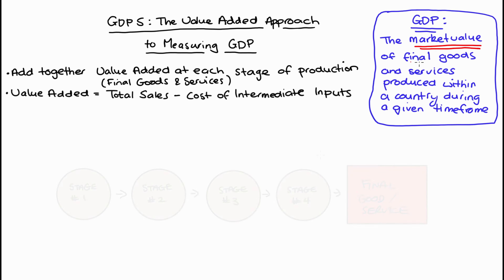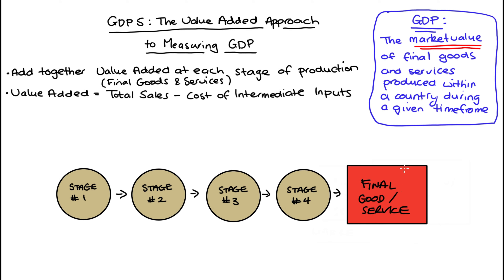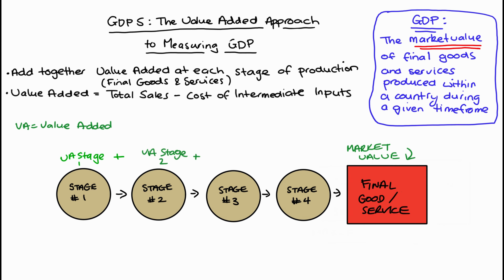Very abstractly, for instance, if to produce some final good or service it took four stages, the final market value of that final good or service can be decomposed into the value of production achieved at stage one, plus the value that is added at stage two, at stage three, and at stage four. So we're reimagining the market value as a sum of the value added at each stage of production. The process doesn't have to be linear — the main point is that the market value of a final good or service can be conceptualized as the sum of the values added at each stage.